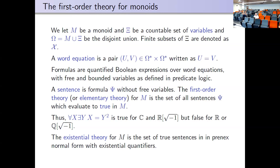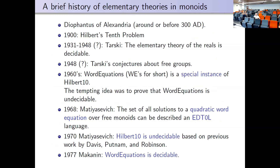A sentence is a formula with no free variables, and the first-order theory (or elementary theory) of a monoid is the set of all sentences which evaluate to true in your favorite monoid. The existential theory consists of true sentences in prenex normal form with only existential quantifiers. Now I come to the history. I once wrote an article called 'More Than 1700 Years of Word Equations,' which is cited very often. Diophantus of Alexandria is where it started.